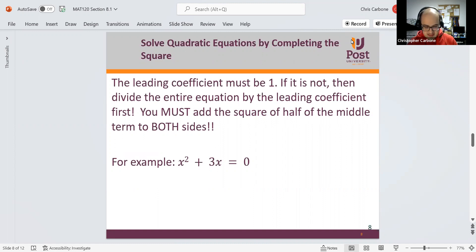So x squared plus 3x equals 0. To both sides of this equation, we need to take 3, divide it in half, and square it. This makes 9 over 4. We're going to add 9 fourths to both sides of this.